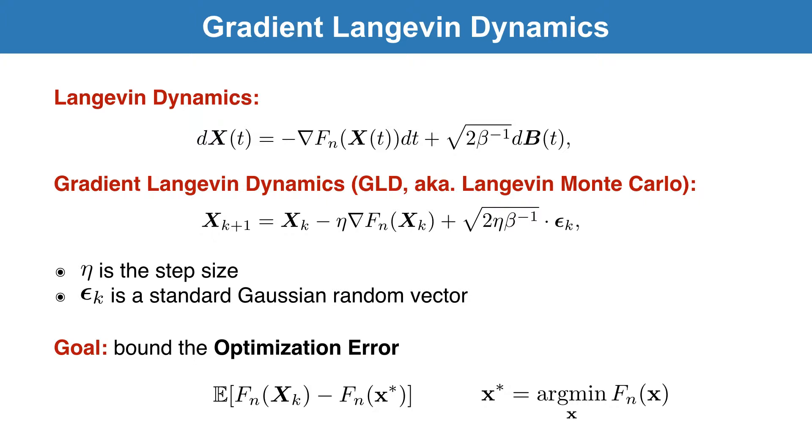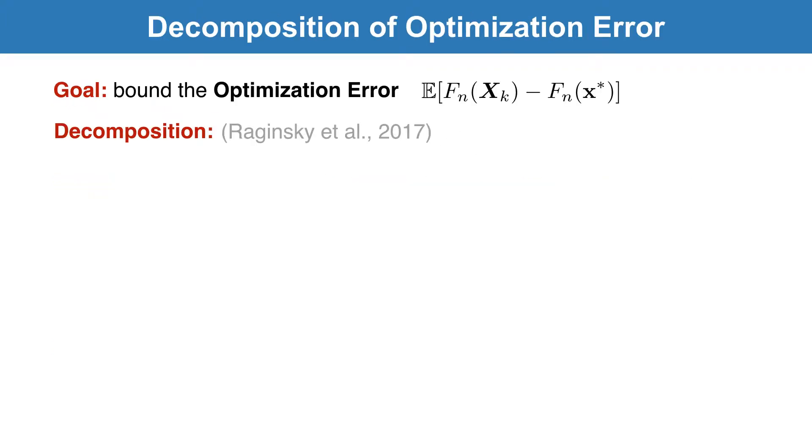That means we need to upper-bound the optimization error. Previous work connects the discrete time process with the continuous-time dynamics, and then with the stationary distribution of the dynamics, which concentrates on the global minimizer. Then, the error is decomposed as follows.